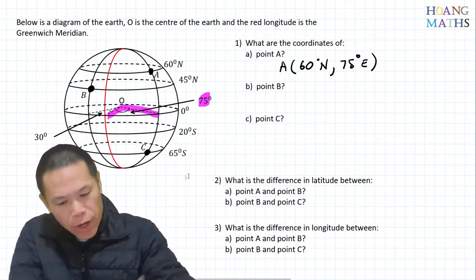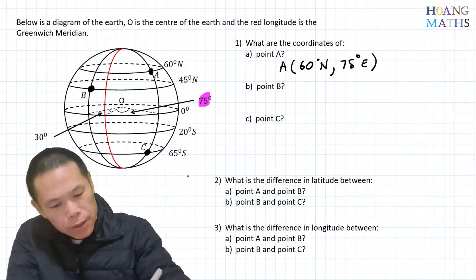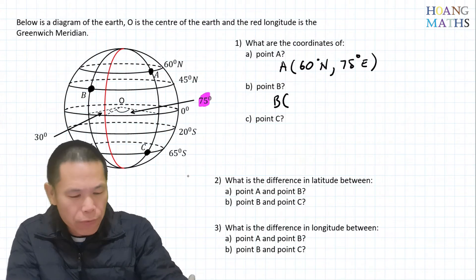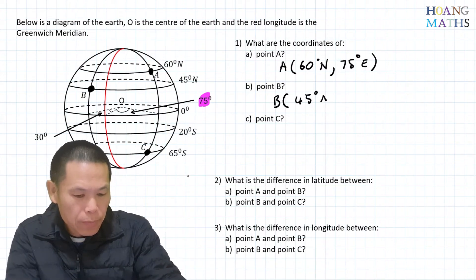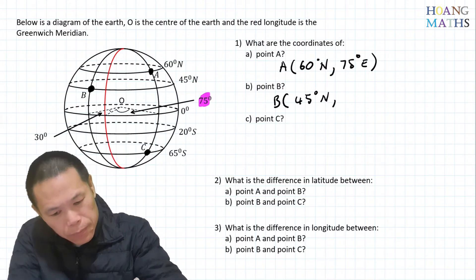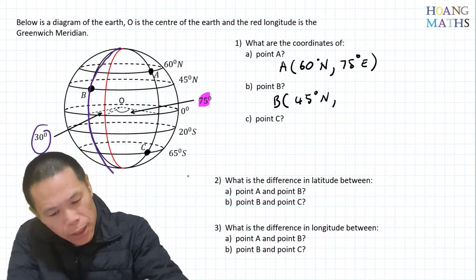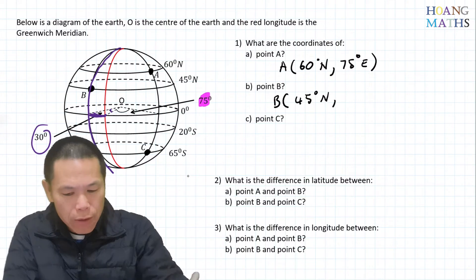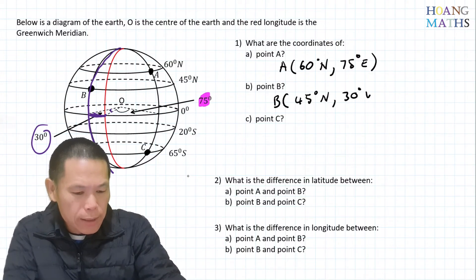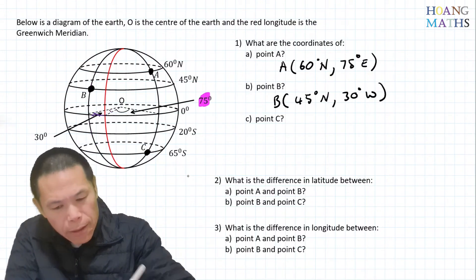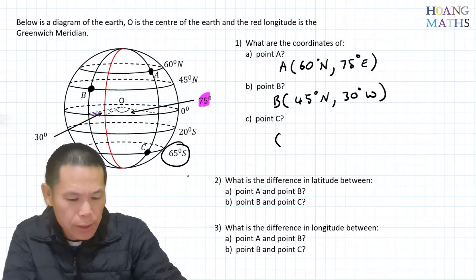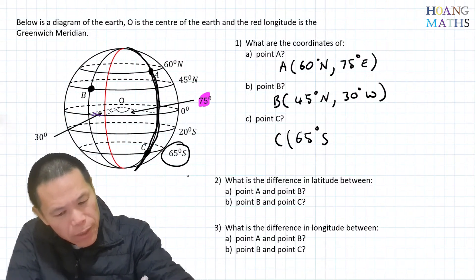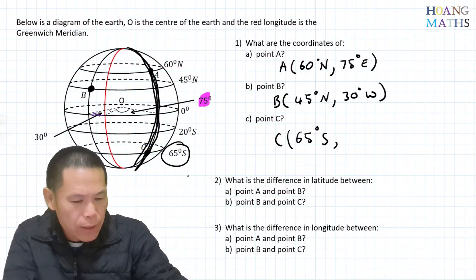For point B, the coordinates are: latitude is 45 degrees north of the equator. The longitude along this line is 30 degrees west of the Greenwich meridian because it is on the left-hand side. For point C, it is 65 degrees south, and since it shares the same longitude line as A, it is 75 degrees east.